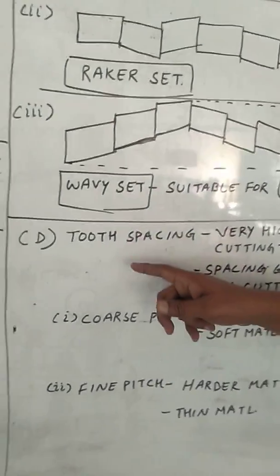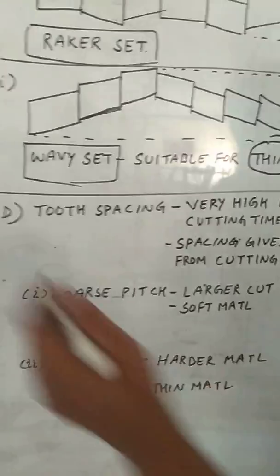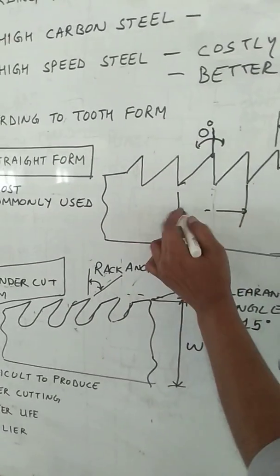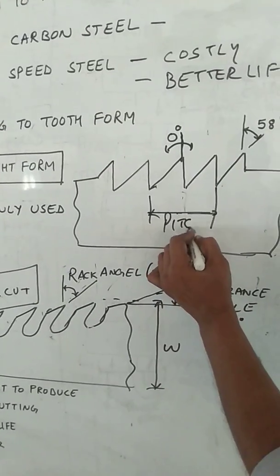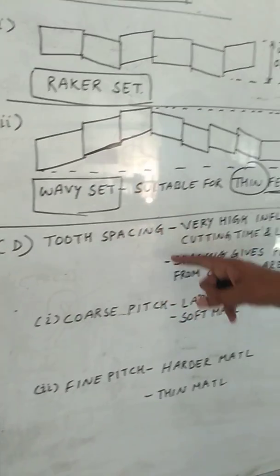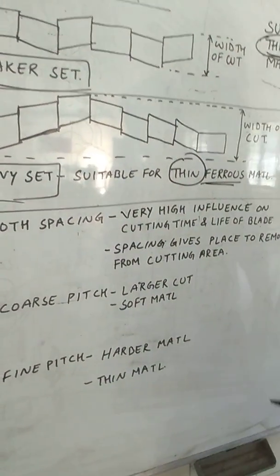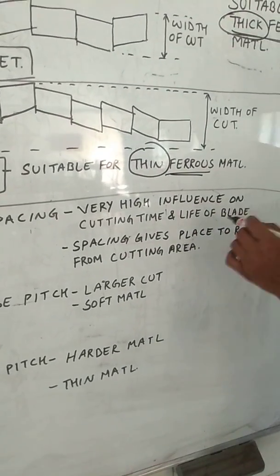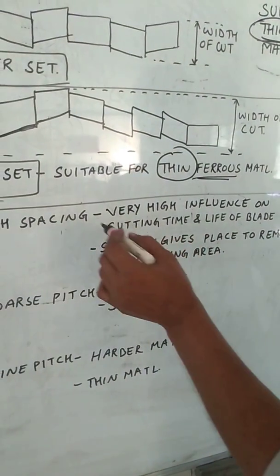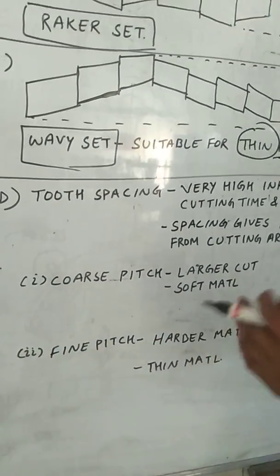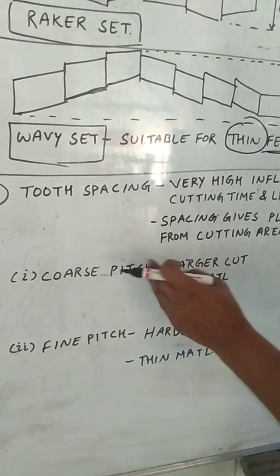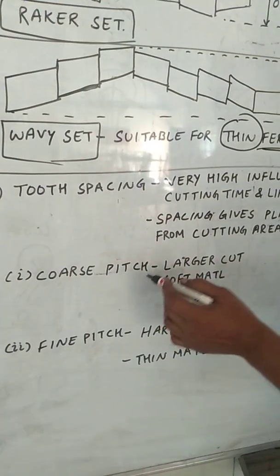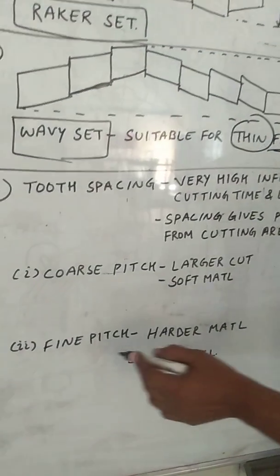The fourth category is the tooth spacing. Tooth spacing means this is the spacing of tooth, and this is known as pitch. Tooth spacing is also known as pitch between these two teeth. Very high influence on the cutting time and life of the blade. If the spacing is coarse or having more than this fine pitch, then we can have a larger cut. And this coarse type of pitch is used for soft material.